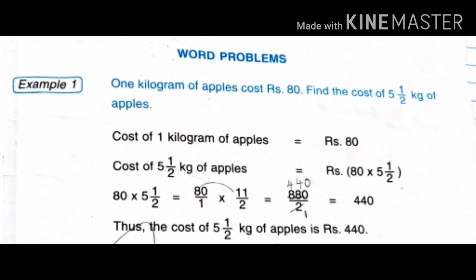5 and 1/2 is a mixed number, so we convert it to an improper fraction: 2 fives are 10, plus 1 equals 11, giving 11/2. The whole number 80 is written as 80/1, since the denominator of a whole number is always 1. So we calculate 80/1 into 11/2. We cancel common factors and the answer is Rs. 440.